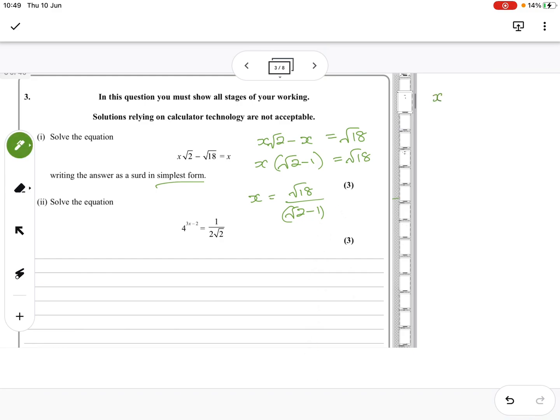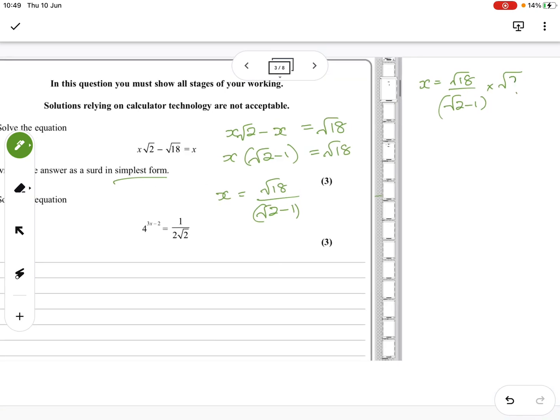So over here. So I've got root 18 over root 2 minus 1, so I'm going to times by root 2 plus 1 on the top and on the bottom. So I'm going to end up with root 36 plus root 18 all over root 2 times root 2 is 2 minus 1 times plus 1 is minus 1. So I've got 6 plus root 18 is 3 root 2 over plus 1, which means my answer is that.